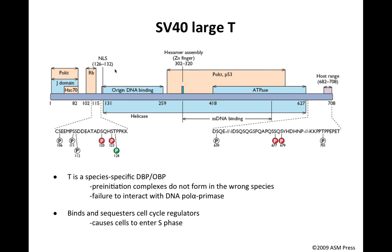There is a short part which is a nuclear localization signal. This helps get the T antigen into the nucleus. The protein is made in the cytoplasm, but it has to do its work in the nucleus because that's where the viral DNA is and where viral DNA replication occurs. This NLS signal gets SV40 large T back into the nucleus so it can work.